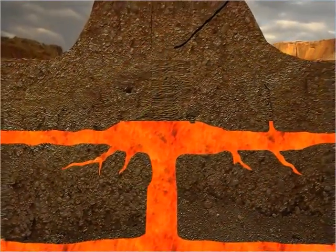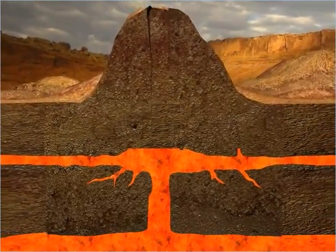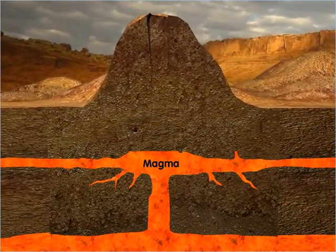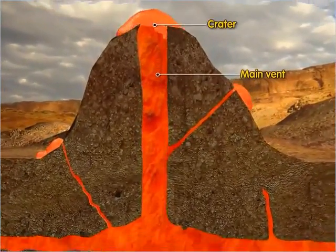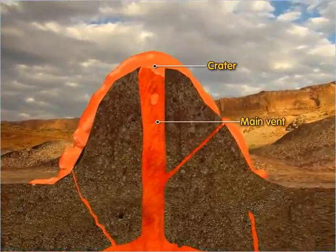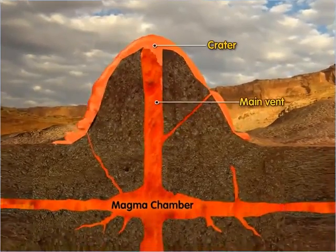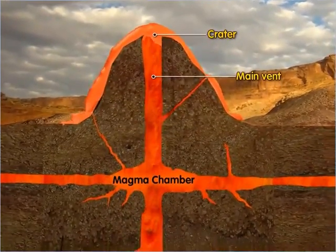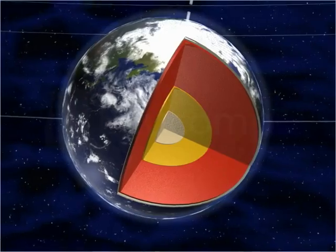Very hot rocks sometimes melt into thick molten liquid called magma. The magma sometimes oozes out from cracks that develop on the crust. This is called a volcano. After reaching the surface of the Earth, the magma is called lava.